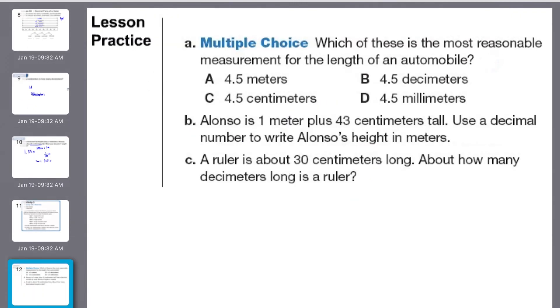All right here is your lesson practice. So remember you have millimeters, times ten of those would give you one centimeter, ten of those would give you one decimeter, and ten of those would give you one meter.